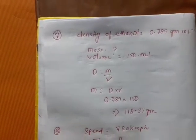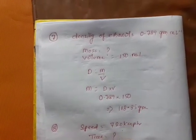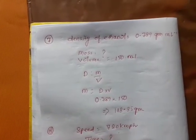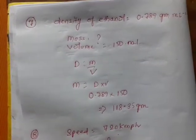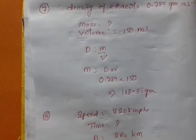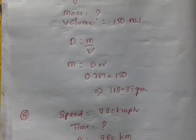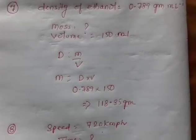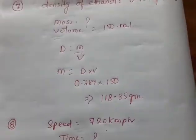Numerical number seven: the density of ethanol is 0.789 gram per liter; we need to calculate the mass. Volume is 150 ml. Density equals mass by volume, so mass equals density multiplied by volume: 0.789 multiplied by 150 gives the answer as 118.3 grams. Now, question number eight: speed is 720 kilometers per hour.